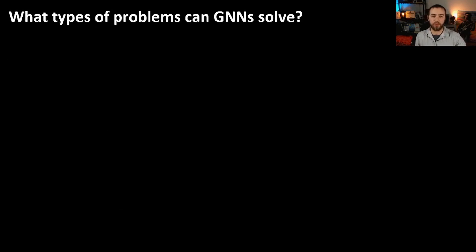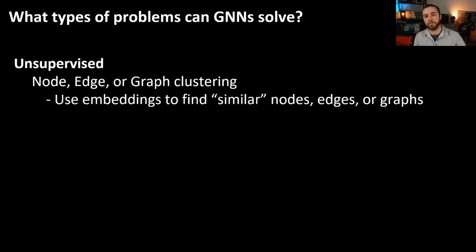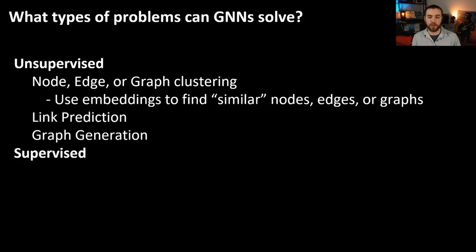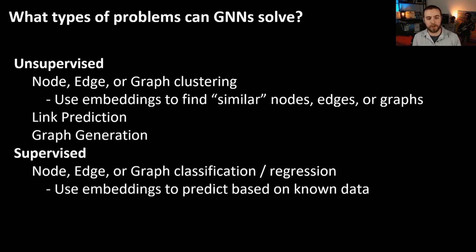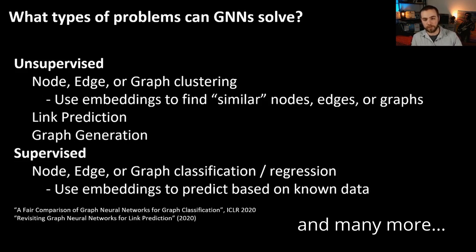And that graph neural networks provide a very interesting opportunity to model new systems, to provide higher prediction accuracies, whatever you're looking for. Now, before we get into the mathematical details of graph neural networks, we're going to go over some of the interesting types of problems that graph neural networks can actually solve. So of course, they can solve unsupervised problems, but the type of unsupervised problems they can solve are sort of broader than with other classes of models. So you can do things with node, edge, or graph clustering, where you're trying to use your embeddings to find some type of similarity between nodes, edges, or graphs. You can also do link prediction, where you're trying to predict if a link will exist at a future time between two nodes. And you can do things like graph generation. You can also do things in the supervised domain, of course. So you can have node, edge, or graph classification, or regression. And this is where you're going to be using embeddings to predict based on known data.